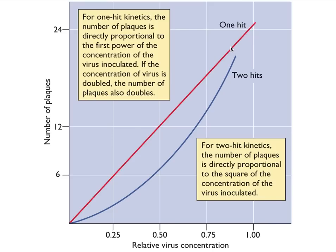Some viruses follow two-hit kinetics: the dose-response curve is a curve like the blue line shown, because two virus particles are needed to form a plaque. For two-hit kinetics, the number of plaques is directly proportional to the square of the virus concentration inoculated. These viruses require two particles because the genome is in two pieces and you need both parts to enter the cell to initiate infection. Some viruses even require three particles. For most viruses, however, one particle is enough to form a plaque.